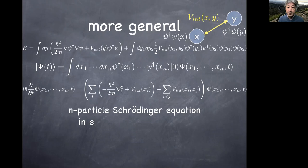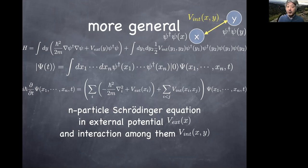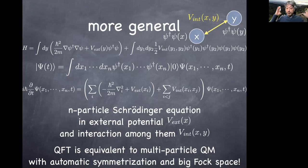You can correctly describe external potential and internal interaction potential for this multi-particle system. Once again, we are reproducing N-particle quantum mechanics with external potential and internal interactions from the quantum field theory. Quantum field theory has exactly the same physics content as multi-particle quantum mechanics, but now with automatic symmetrization and a big Fock space — a Hilbert space with zero particles, one particle, two particles, and so forth — all included in this single large Hilbert space. That's how QFT reproduces everything we know about quantum mechanics as studied in Physics 137.